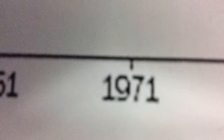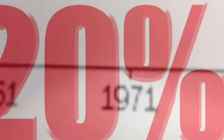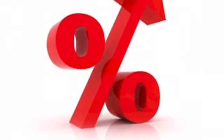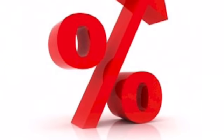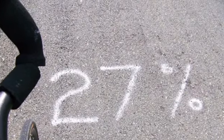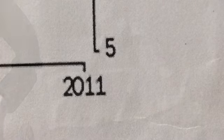It went up minimally between 1971 and 1979, increasing from 20% in 1971 to 23% in 1979. Finally, the population fluctuated from 1979 to 2011, rising to 27% in 2011.